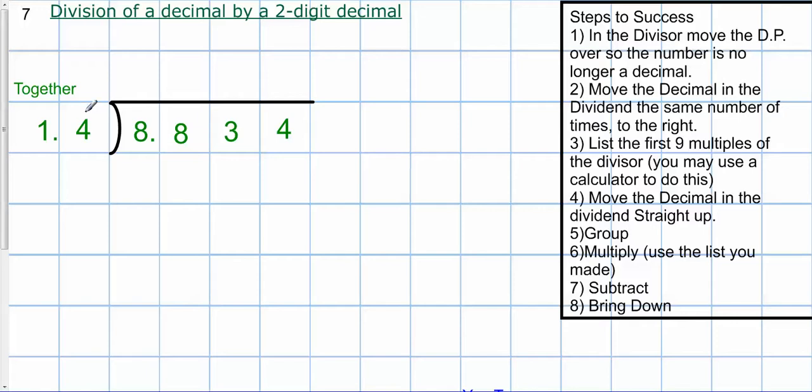So first thing I need to do, extra first step, is I need to take this decimal point and move it one place to the right. Also known as multiplying by 10.